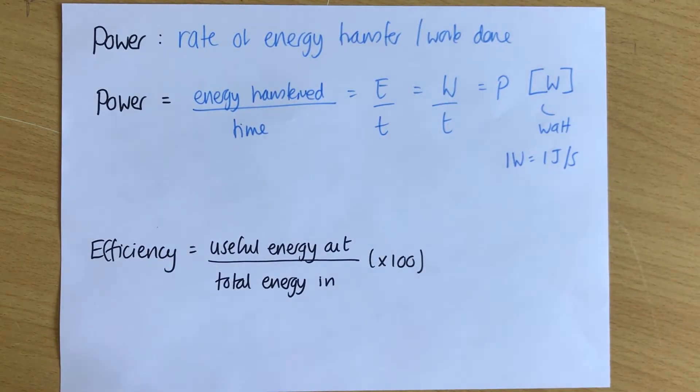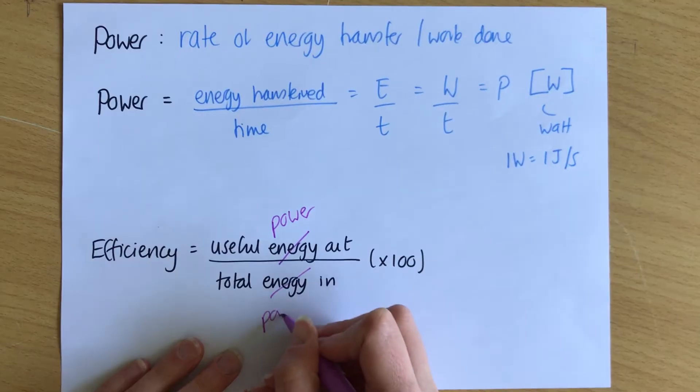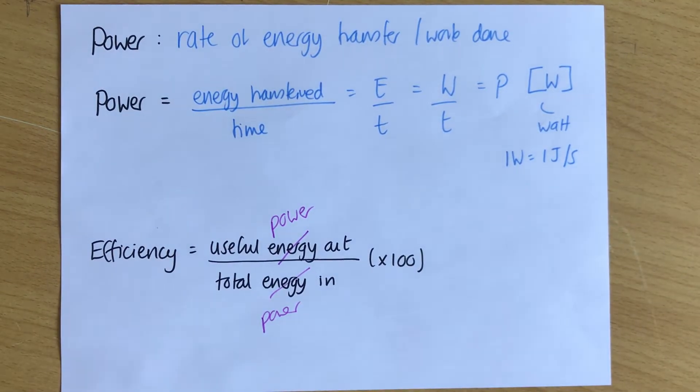Now, a quick add-on is that you will find out that efficiency is useful energy out over total energy in times by 100. You can actually also use power instead of this. So you could write useful power out over total power in. Because power is energy over time, the energies will cancel. So you can use that in this equation just as a little caveat. So I'm now going to add in the bit of the video that is for the crossover between the two topics. So it might be a little bit out of order compared to what you'd expect. And blame Edexcel for splitting their topic up in such a weird way across two papers.